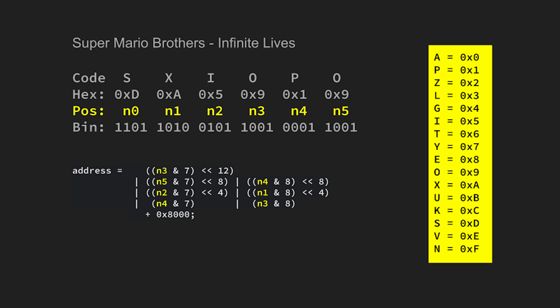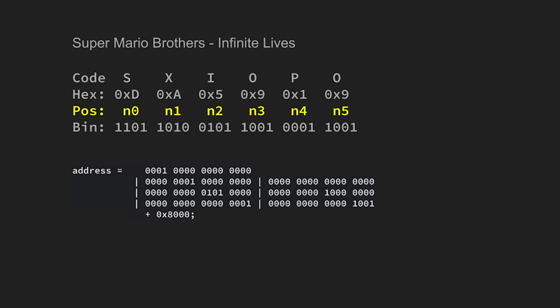This does look quite complex, but let's break it down. If we take N3, which is 1001, and AND it with 7, which is binary 0111, we get the result 0001, then shift this 12 bits to the left. We do the same for N5 by ANDing it by 7 and shifting it 8 bits to the left. Then N4, ANDing it by 8 and shifting it 8 bits to the left. Then N2, ANDing it by 7 and shifting it 4 bits to the left. Then N1, ANDing it by 8, shifting it 4 bits to the left. Then N4 again, ANDing it by 7. And finally N3, ANDing it by 8. Once these calculations are done, these are all the binary values represented in each of these conditions.